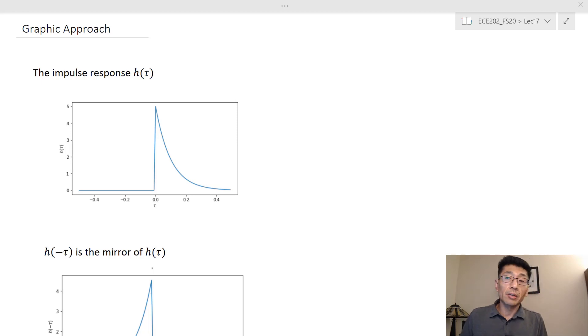Let's look at the graphic approach to interpreting the convolution integral. Mathematically, very rigorously, we derive it as y(t) is equal to the integration of h(t minus tau) times x(tau) with respect to tau. So what is this integration actually doing?